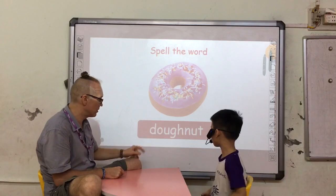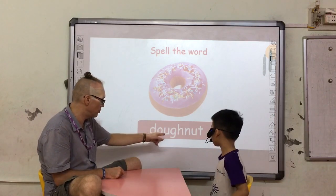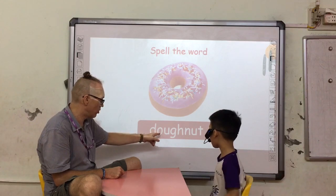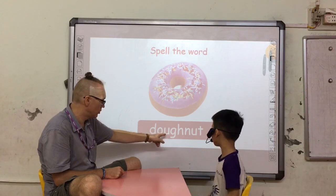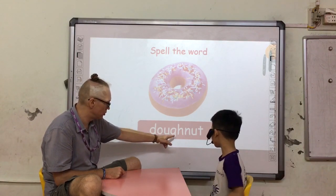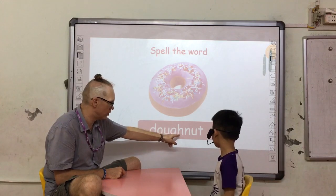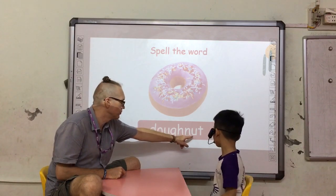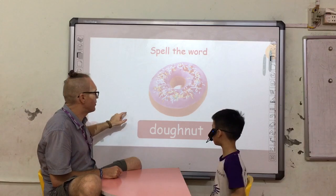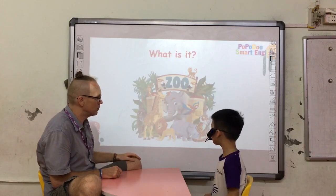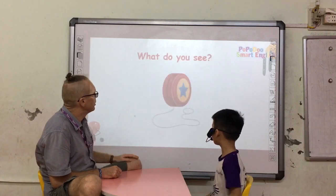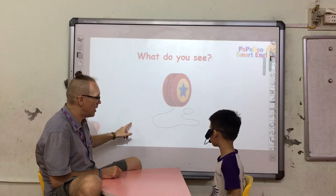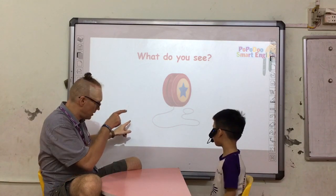Can you spell for me, Donna? D. D. O. U. Z. L. H. A. U. T. Okay. What is this? Zoo. What do you see? I see a yo-yo. Yo-yo.